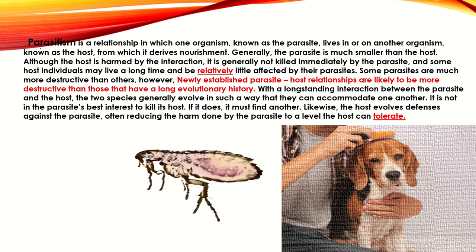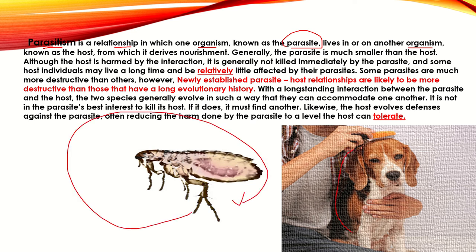So, parasitism — what do you mean by parasitism? Parasitism is a relationship in which one organism, known as the parasite, lives in or on another organism. For example, fleas live on another organism's body and suck the blood. That other organism is known as the host, and from it the parasite derives nourishment. Generally, the parasite is much smaller than the host.